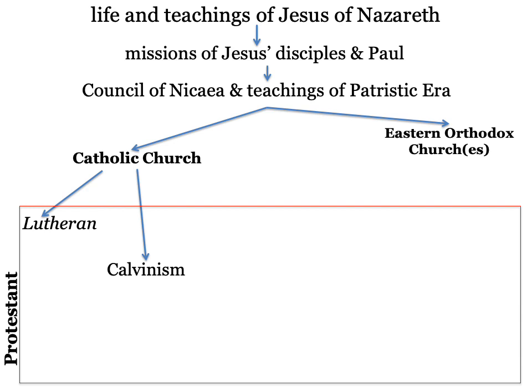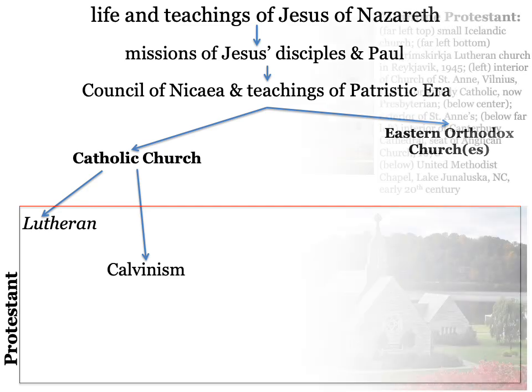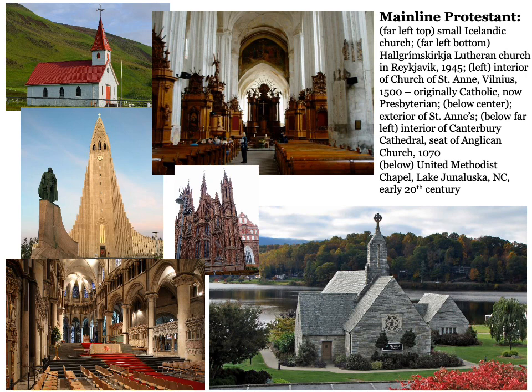Now you have an umbrella term known as Protestants. Lutherans are a branch of Protestants; Calvinists are a branch of Protestants. All Lutherans are Protestants, but not all Protestants are Lutheran. The things in bold on this chart are the overarching categories — Catholic Church, Eastern Orthodox, Protestant. Protestants change and strip down things significantly. Part of the Protestant argument is that you need to get rid of the trappings of the Catholic Church. You can see Protestant churches, while still somewhat grandiose, are nowhere near as ornate.